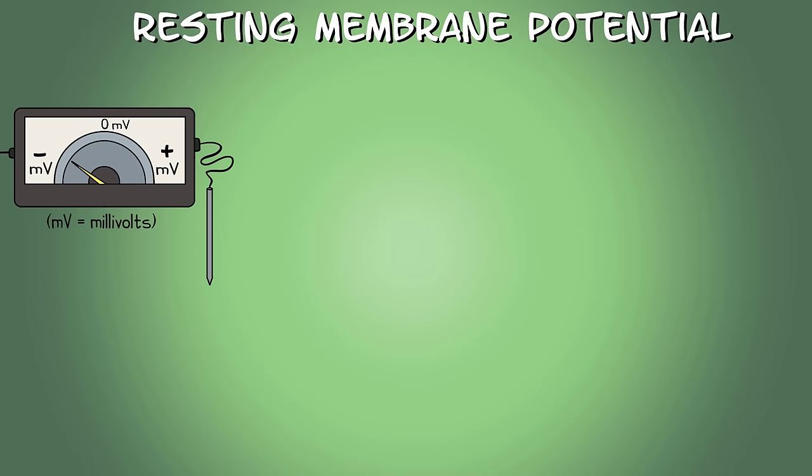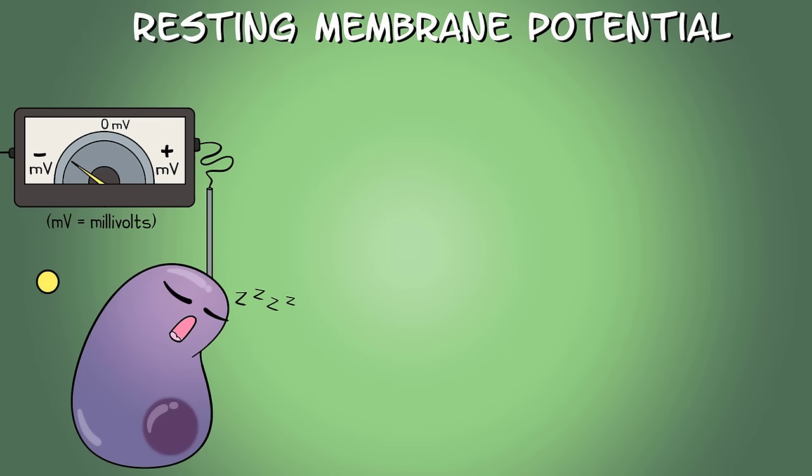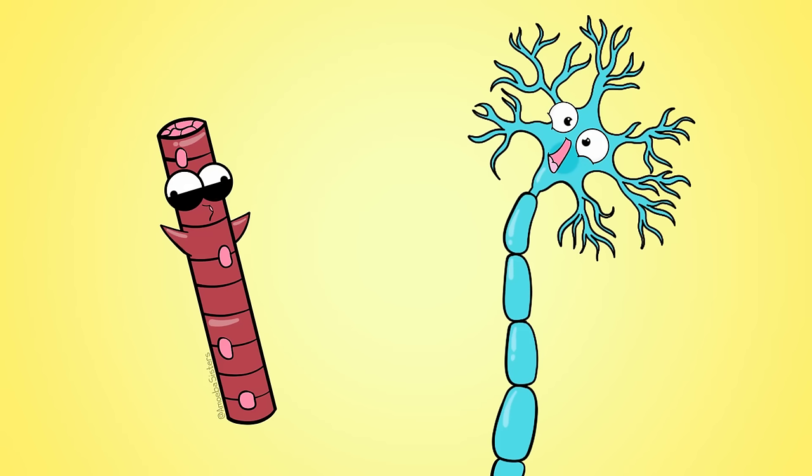So back to this resting potential. This involves its electric potential, the difference between the electrical voltage inside and outside of the cell. Cells have their own resting potential depending on the type of cell. At rest, generally, most cells are more negative inside the cell than outside the cell.